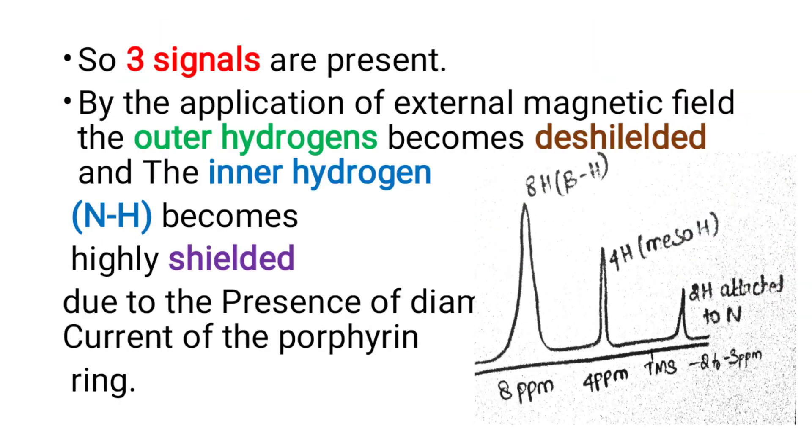Eight beta hydrogens show a peak in downfield around 8.1 ppm because the hydrogen is highly deshielded. The four meso hydrogens show a peak at 4.3 ppm. Finally, the NH hydrogen shows a peak in upfield, between minus 2 to minus 3 ppm, because this hydrogen is highly shielded.